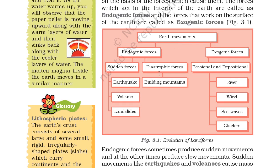Endogenic forces are further divided into sudden forces and disastrous forces. Sudden forces include earthquakes, volcanoes, and landslides, while disastrous forces involve building mountains. In the exogenic forces, erosional and depositional processes happen by river, wind, sea waves, and glaciers.